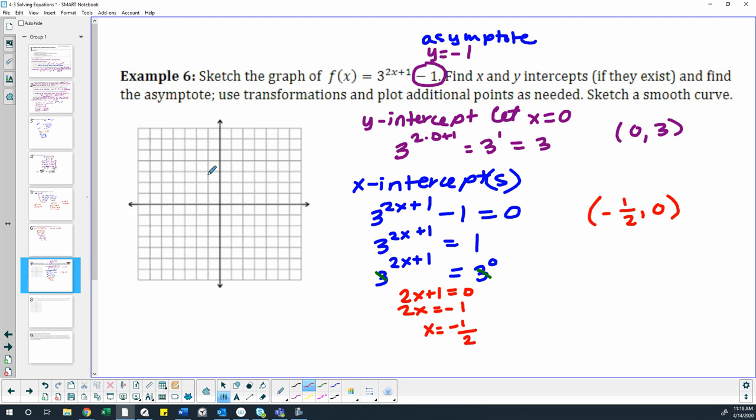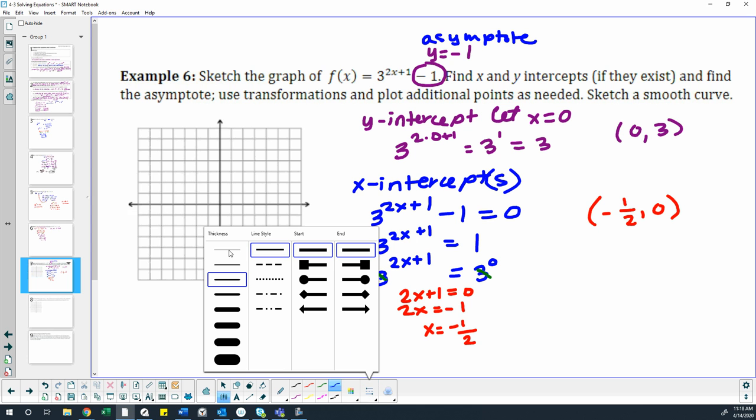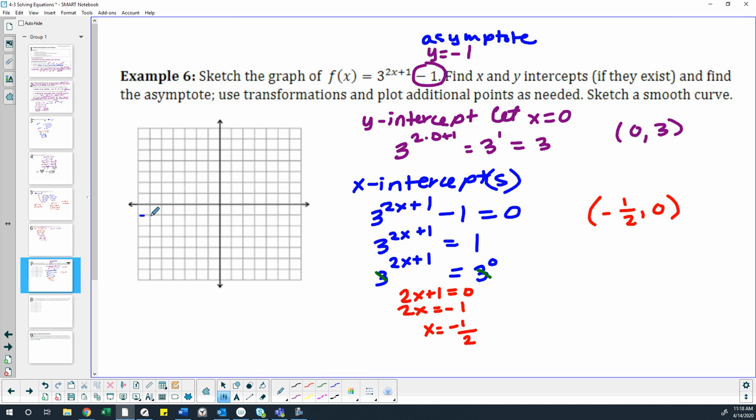Let's go ahead and plot these points. We've got our asymptote. I'm going to do a dotted line for that at negative 1. It's not incredibly straight, but you get the idea. Our y-intercept was at 0, 3, and our x-intercept is at negative 1 half, 0. Using those details, we can go ahead and sketch in our graph.